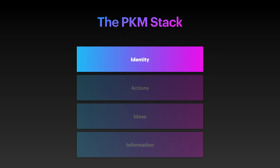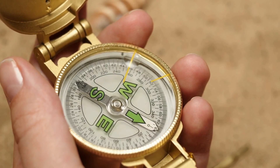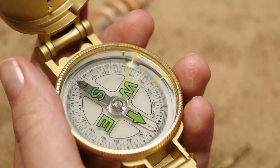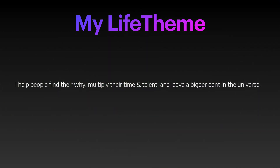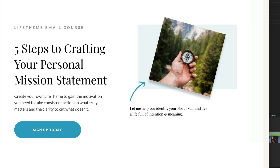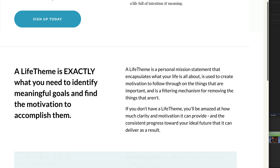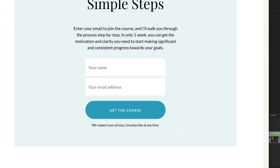Notice how this approach works the PKM stack from the bottom up — it's a very reactionary way to live. But there is another way, a better way, and it requires another layer to be added on top. I call this top layer identity, because it encapsulates who you are and who you want to be. This layer is comprised of your vision and values, and I have a piece I call my life theme — a one-sentence summary of what I want my life to be about. My personal life theme is: I help people find their why, multiply their time and talent, and leave a bigger dent in the universe. I've got a free five-day email course that walks you through the life theme process — there's a link in the description below.